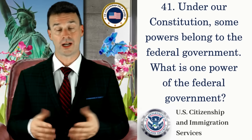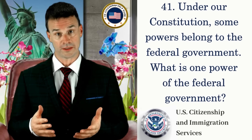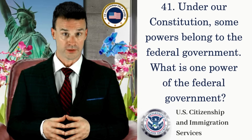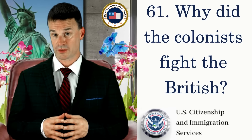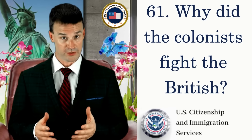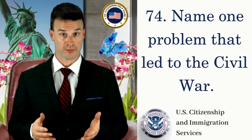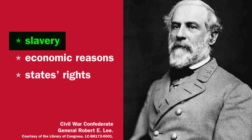Under our Constitution, some powers belong to the federal government. What is one power of the federal government? To print money. Why did the colonists fight the British? Because they didn't have self-government. Name one problem that led to the Civil War. Slavery.